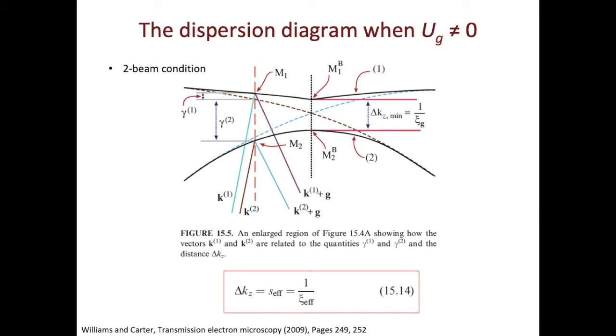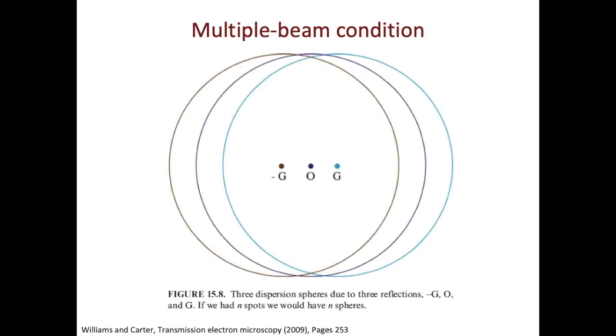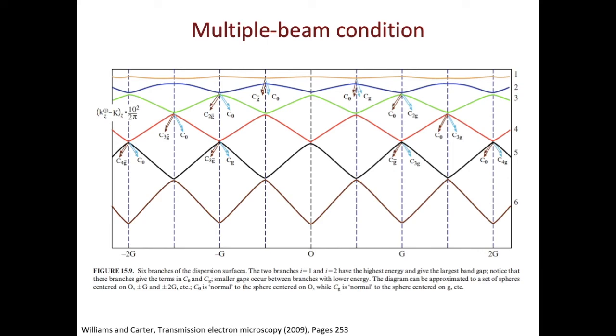We do not have to limit ourselves to just two beam conditions. In the multiple beam conditions, we just need to draw more dispersion surfaces. In the example shown here, it has three beam conditions. We have the minus g and the g. So there are three dispersion surfaces. We can further extend it into a five beam condition. This figure highlights the branches in the five beam condition with Ug not equal to zero.